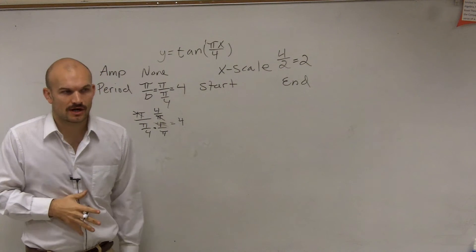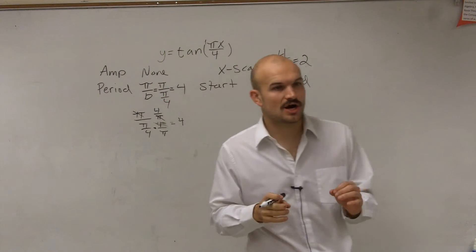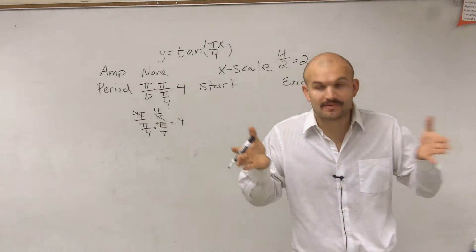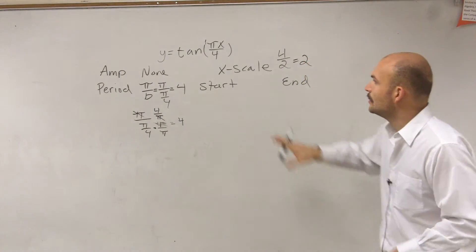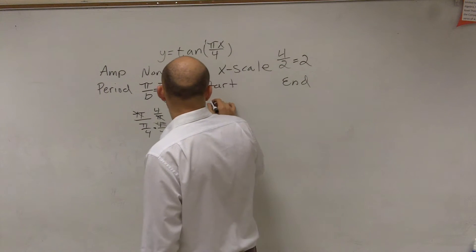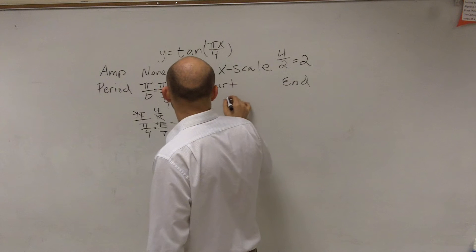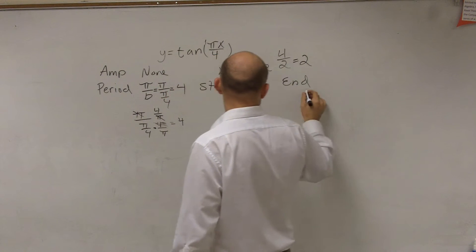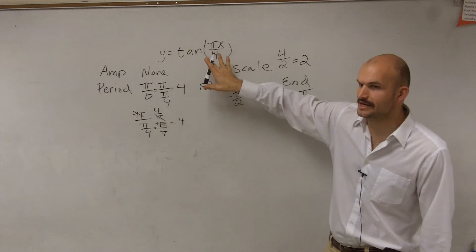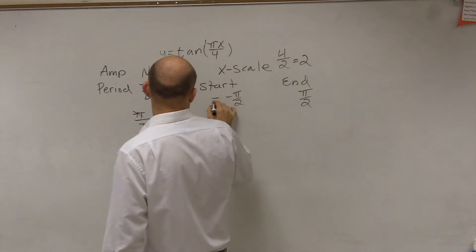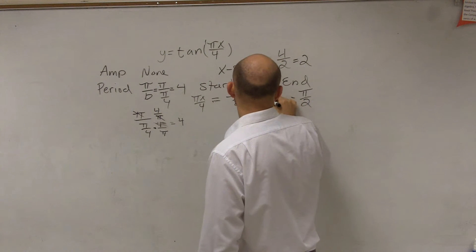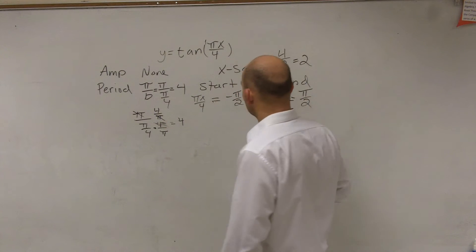Then we need to look at our start and our end. Previously, we had the start was at 0, and then we ended it at 2 pi. That was the parent graph for sine and cosine. Well, now the parent graph for tangent for our initial period is going to start at negative pi over 2 and pi over 2. So again, you're going to do the same thing. You're going to take whatever's inside of your function and set it equal to those two endpoints.